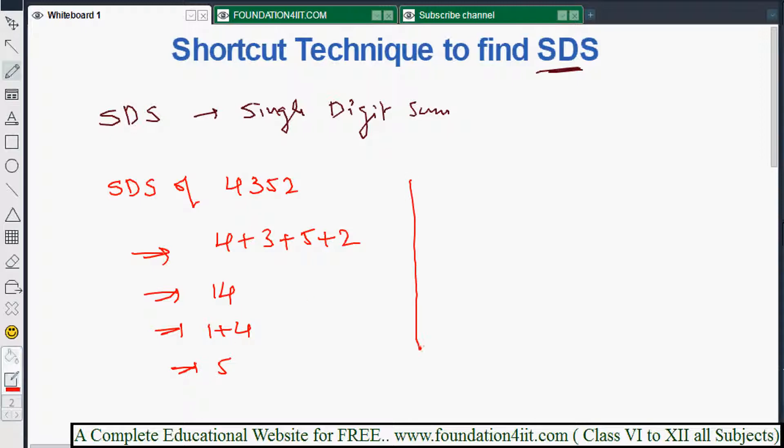In case you feel this is a long procedure, just strike out the digits that add to 9. In this case, 4 plus 5 is 9, so you can remove this directly. Now add the remaining digits: 3 plus 2 is 5. Both methods give the same answer.